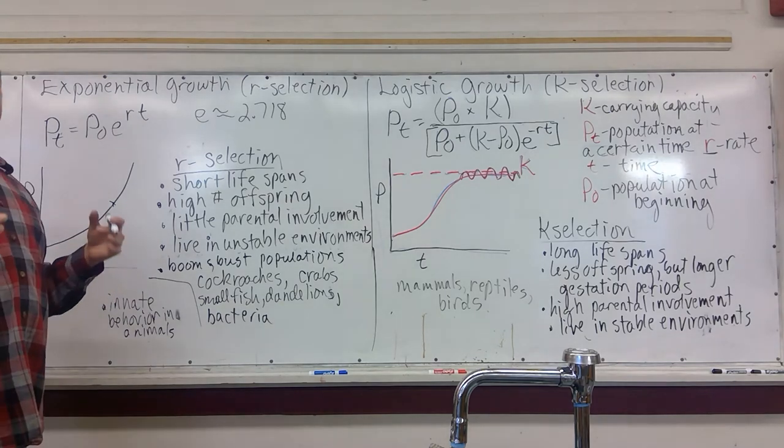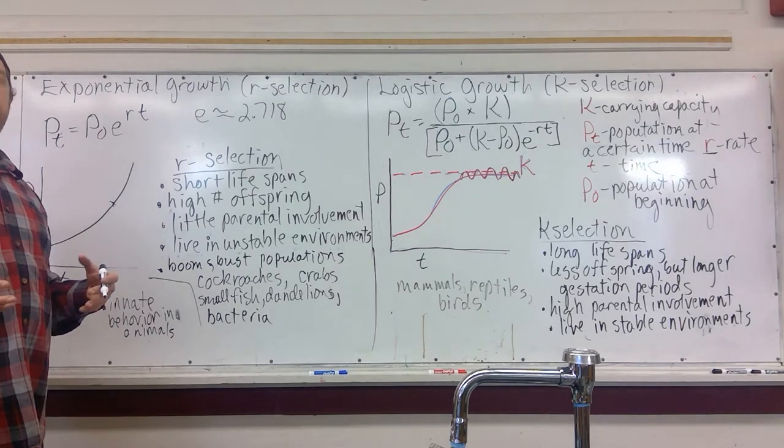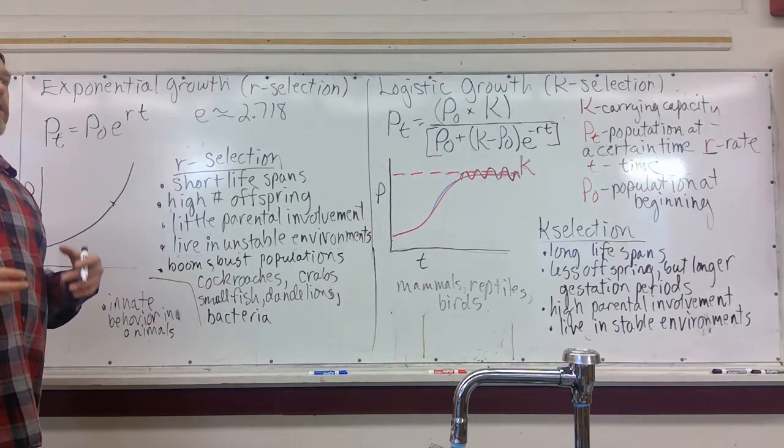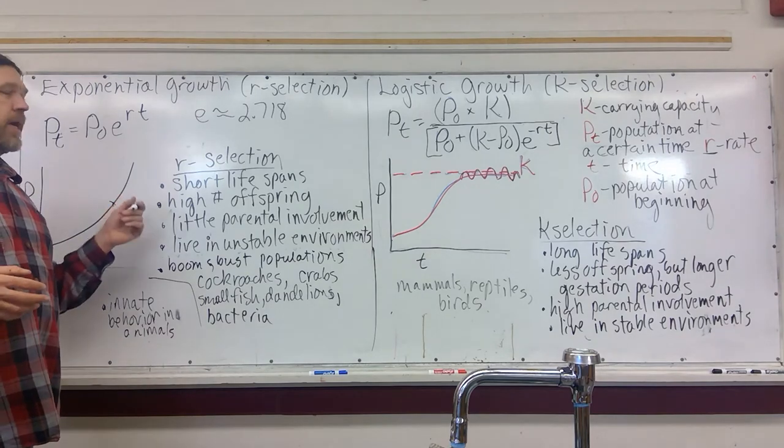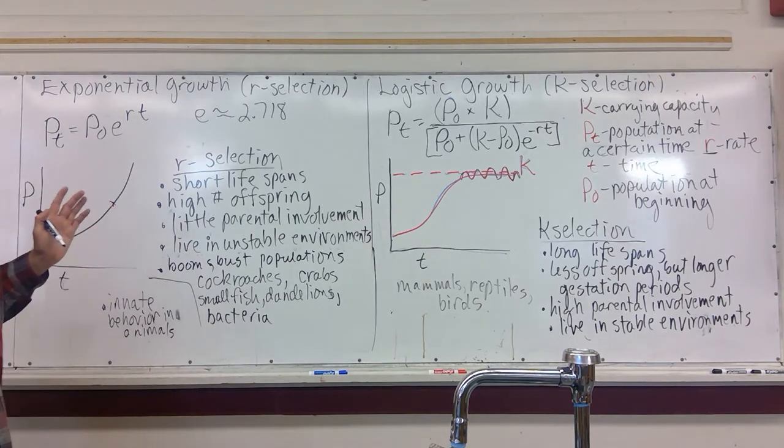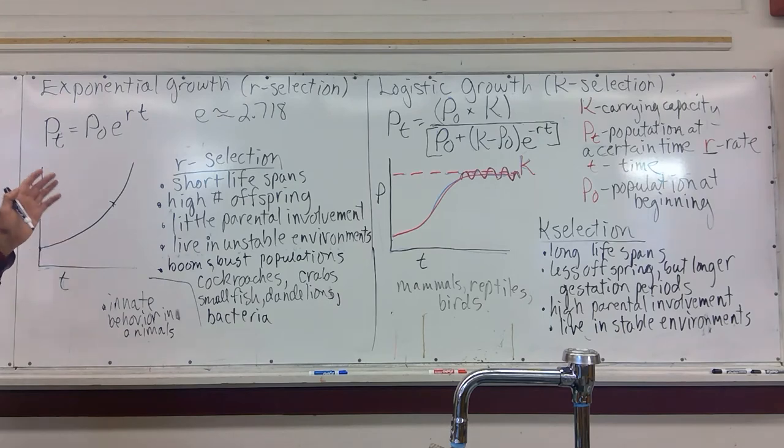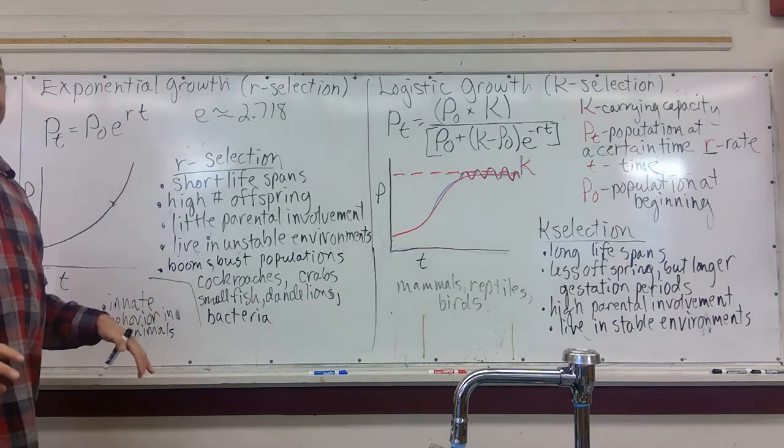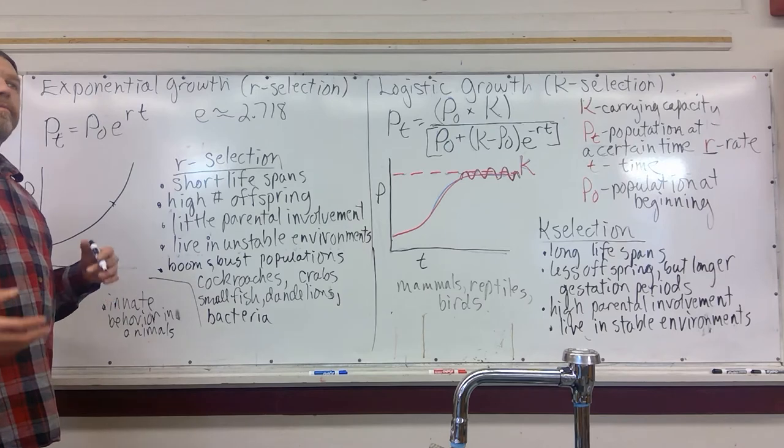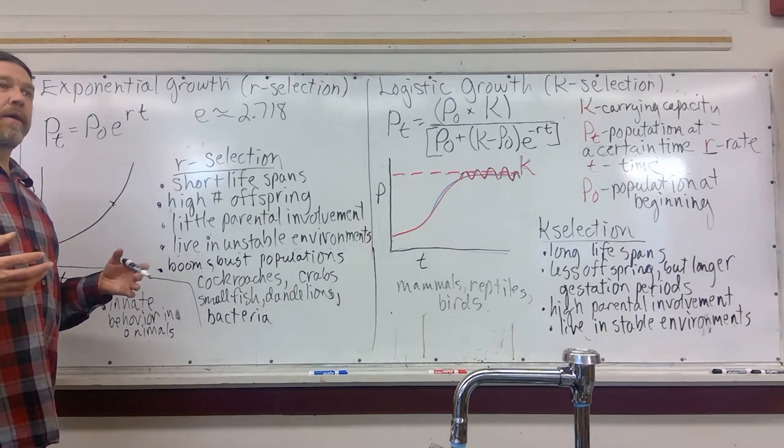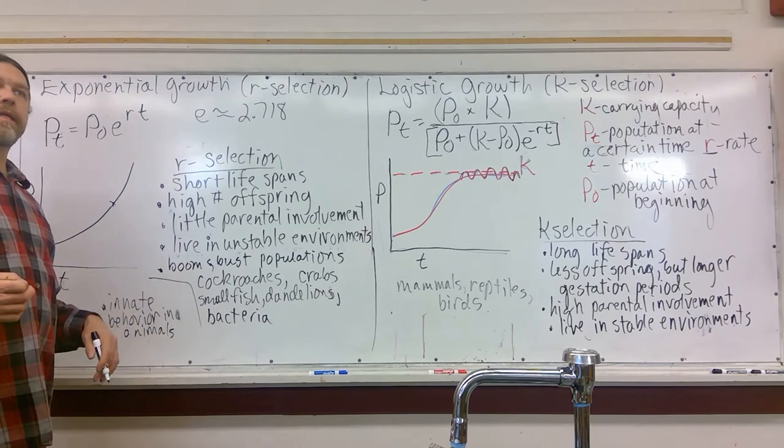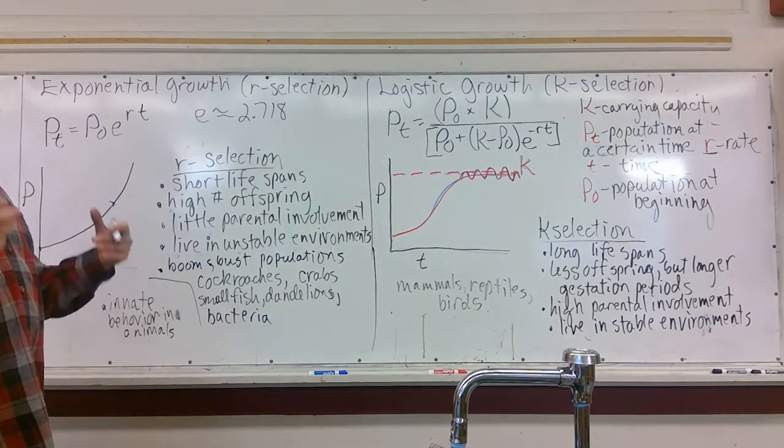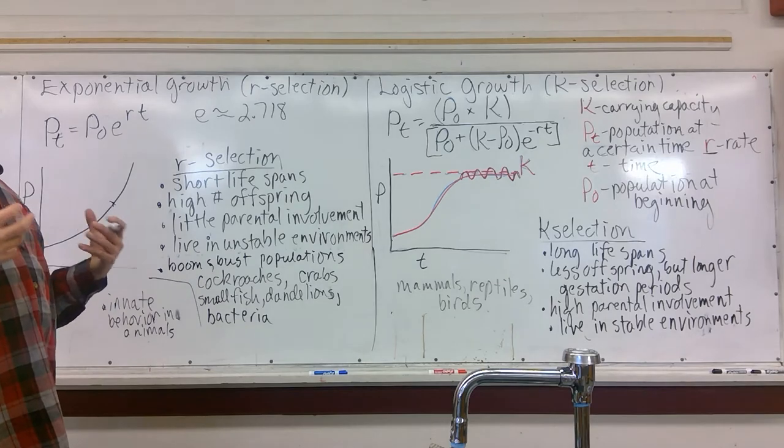Eventually, of course, environmental pressures, biotic and abiotic, whether it is running out of food or the appearance of a predator, will put a check on this growth. And a tendency of a lot of these species is to collapse very quickly. Once again, they can quickly eat themselves out of house and home.